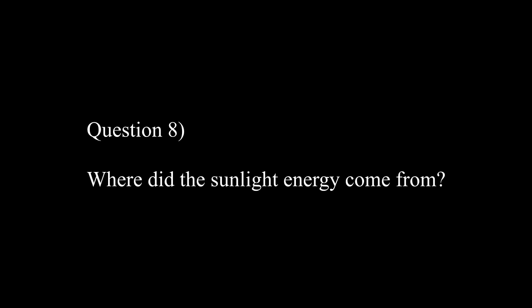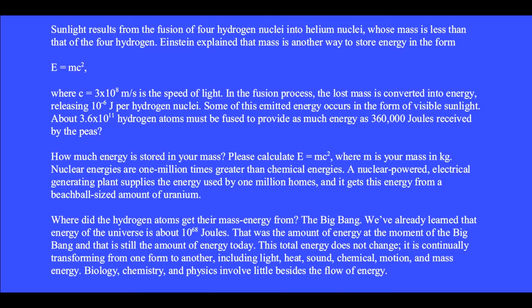Question 8: where did the sunlight energy come from? Sunlight results from the fusion of 4 hydrogen nuclei into helium nuclei, whose mass is less than that of the 4 hydrogen. Einstein explained that mass is another way to store energy in the form E equals MC squared, where C equals 3 times 10 to the 8th meters per second is the speed of light. In the fusion process, the lost mass is converted into energy, releasing 10 to the minus 6 joules per hydrogen nucleus. About 3.6 times 10 to the 11th hydrogen atoms must be fused to provide 360,000 joules received by the peas.